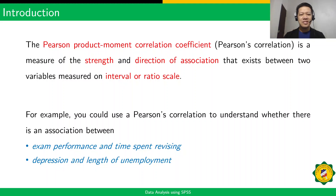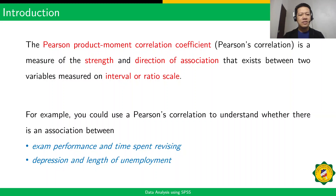The Pearson Product Moment Correlation Coefficient is a measure of the strength and direction of association that exists between two variables measured on interval or ratio scale. For example, you could use a Pearson correlation to understand whether there is an association between exam performance and time spent revising, or depression and length of unemployment.